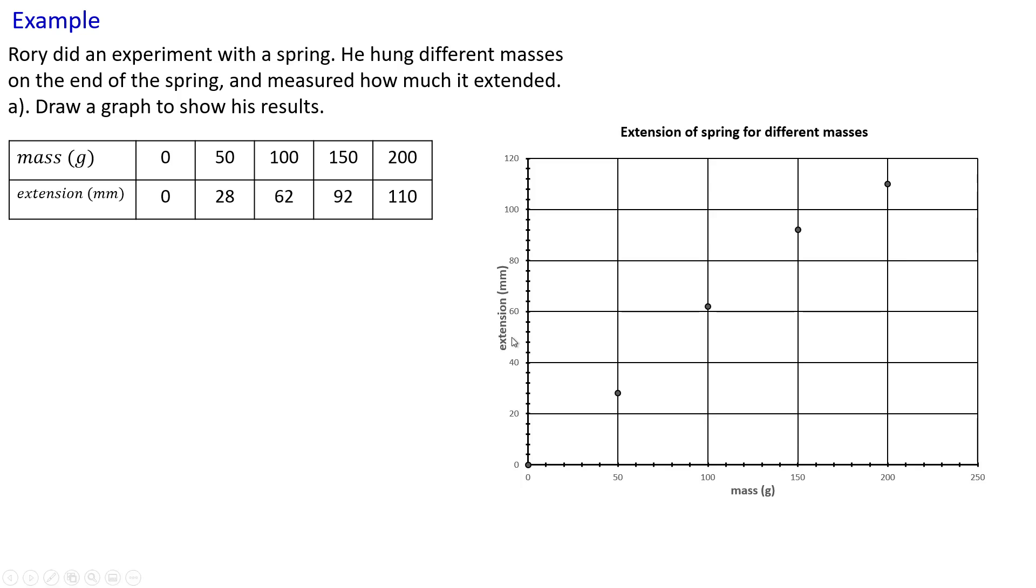So there's my graph with extension on the vertical axis, the y-axis, and the mass in grams on the x-axis. What I want you to do is hit pause and draw this grid in your books. So we're going from 0 to 250 along the x-axis and 0 to 120 along the y-axis. Make sure you put a title and label the axes, so extension in millimeters on the y and mass. Sketch that now. Hit pause, sketch it. When you're ready, hit play again and we'll plot the points together.